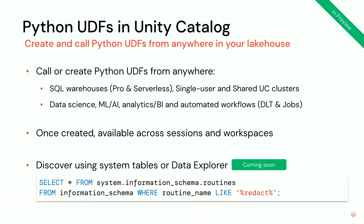In terms of how to discover and find your UDFs, there are two ways. One is using system tables, where you can select all UDFs whose name contains 'redact', and you can also look up comments, catalog, and so on. What's coming really soon is the ability to do this in the UI in the Data Explorer — where you see schemas and tables, you will also see functions, as well as in the search.